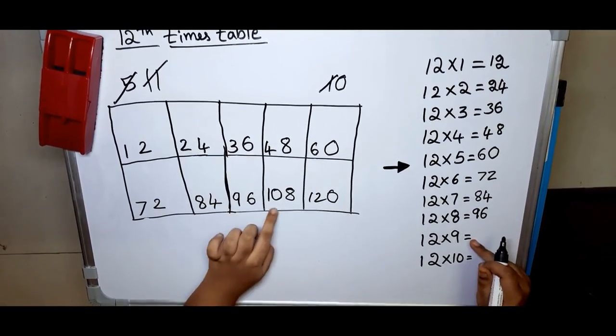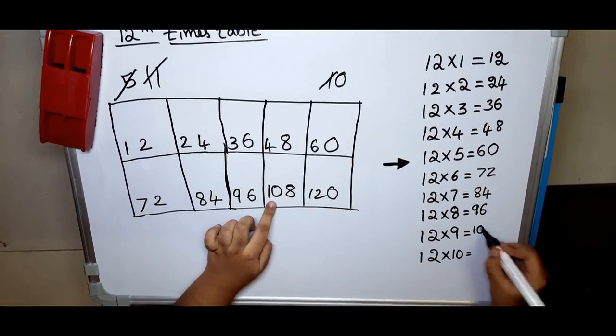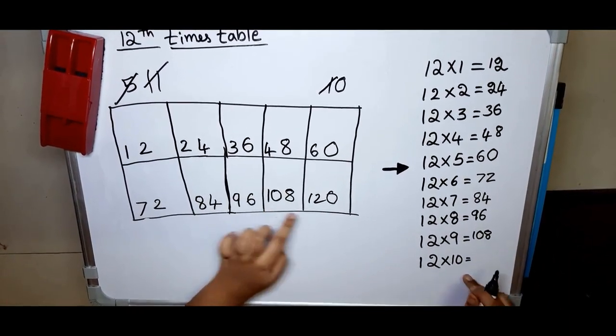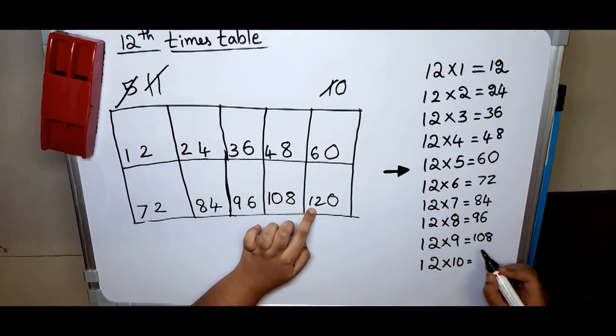Twelve nines are one hundred eight, twelve tens are one hundred twenty.